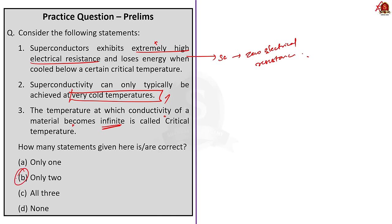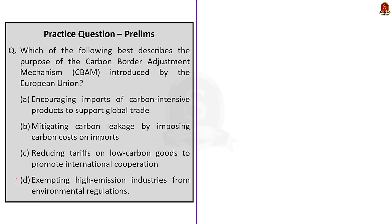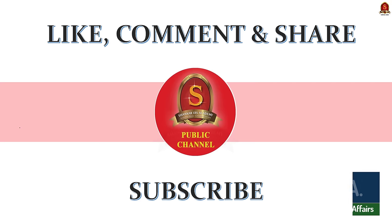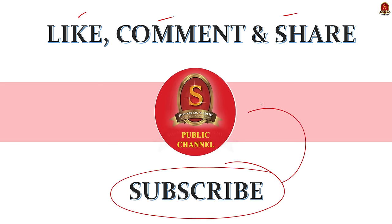Question 3: Which of the following best describes the purpose of the Carbon Border Adjustment Mechanism, CBAM, introduced by the European Union? We know CBAM is a carbon leakage mitigation measure by imposing a carbon cost on various importers, postulated by the European Union to reduce carbon emissions. So the correct option is option B. The quiz question of the day is displayed here and will be posted in the community section — interested aspirants can go and answer it. If you like today's video, like, comment and share it with your friends. For more updates regarding UPSC preparation, subscribe to Shankar IAS Academy. Thank you.